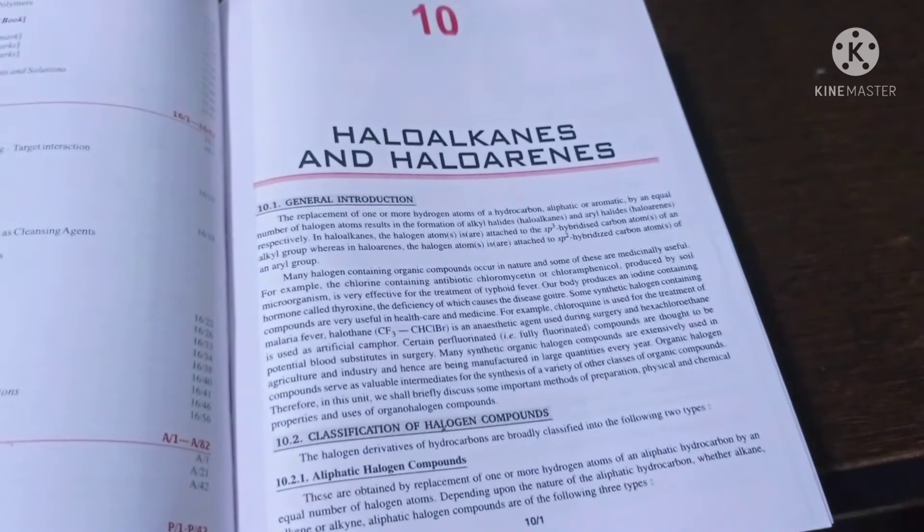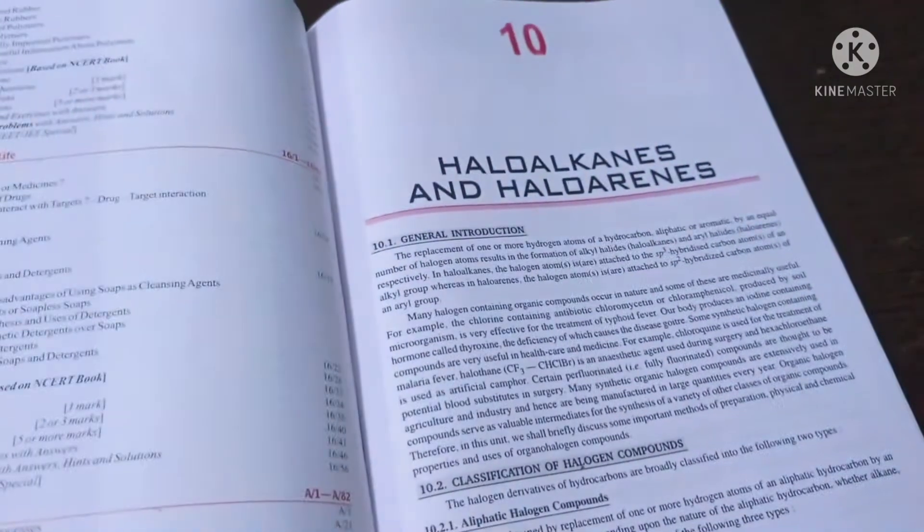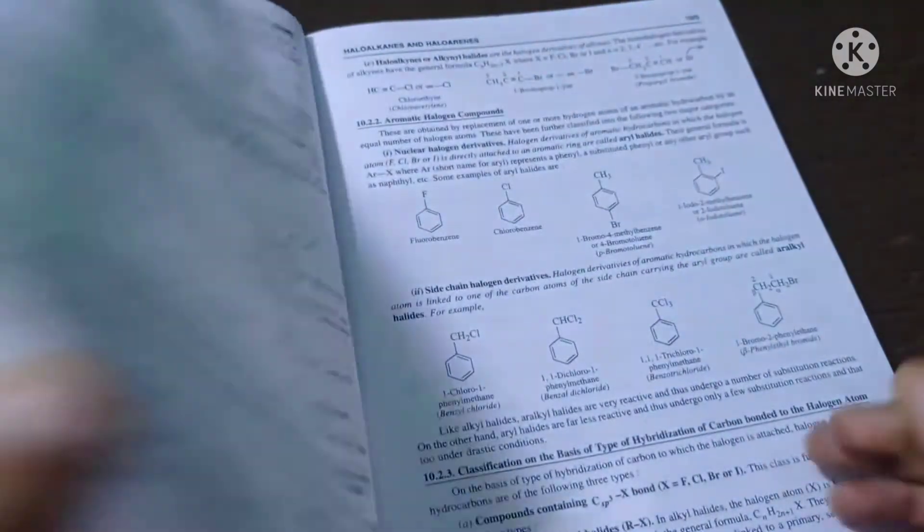You could easily understand because everything is given in very detail, which helps us to understand each and every concept. Like you can see, our chapter 10 is haloalkanes and haloarenes. A general introduction is given.